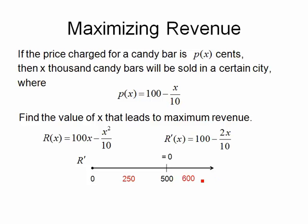So to test, I'm going to pick two values on either side of 500. In my case, I'm going to pick 250 and 600. And I need to put those values into the first derivative and figure out whether I get positive or negative. So let me start with 250. When I put 250 into our derivative, I get 2 times 250 over 10. So that's 500 over 10, which gives me 50. So 100 - 50 will give me positive.